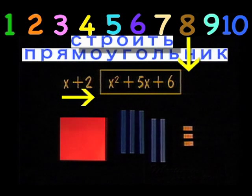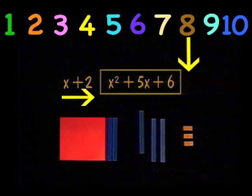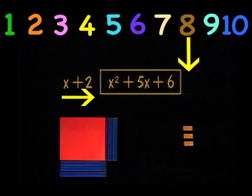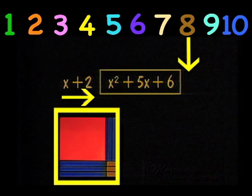In building a rectangle that is x plus 2 over, we will use the largest pieces first. We will place two x's on the side of x square. The rest of the x's on the bottom and the units in the lower right corner. This is how your rectangle would look.